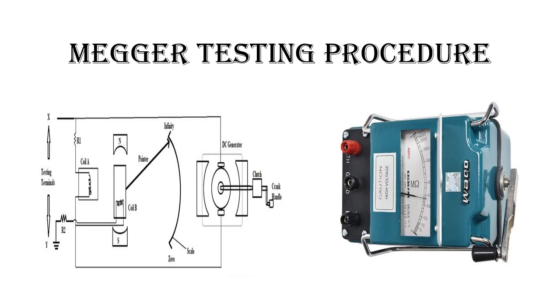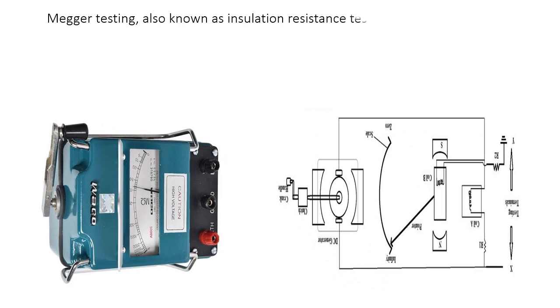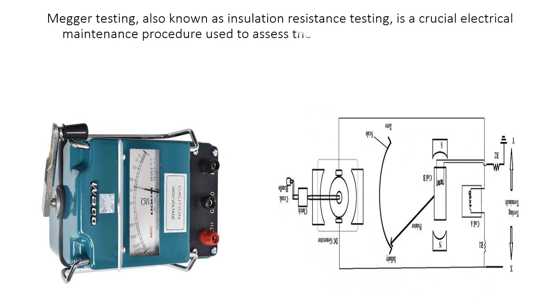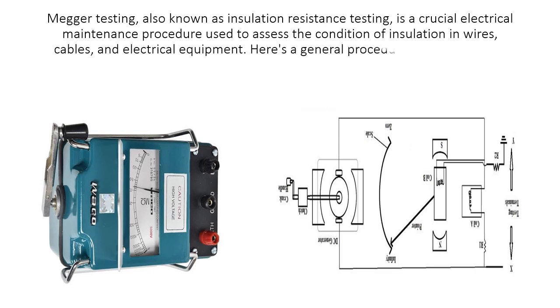Megatesting Procedure. Megatesting, also known as insulation resistance testing, is a crucial electrical maintenance procedure used to assess the condition of insulation in wires, cables, and electrical equipment. Here is a general procedure for conducting a megatest.